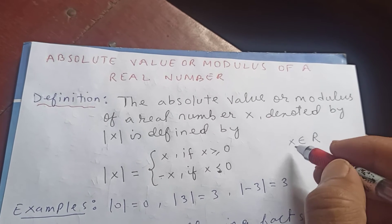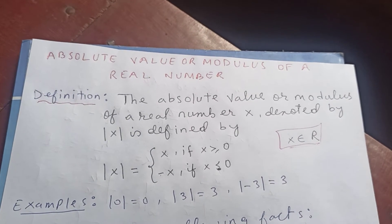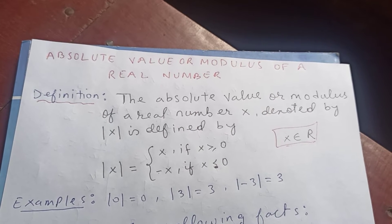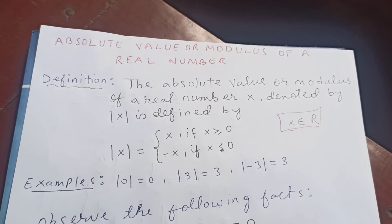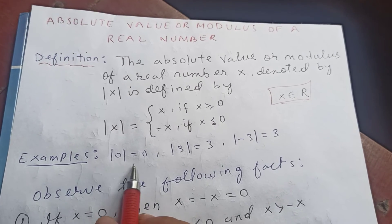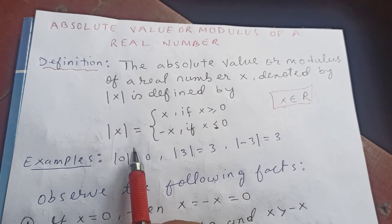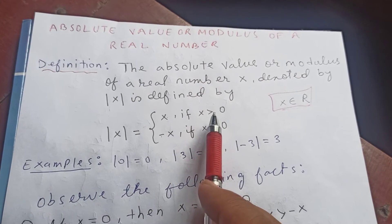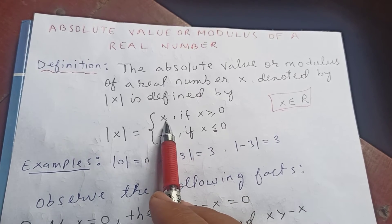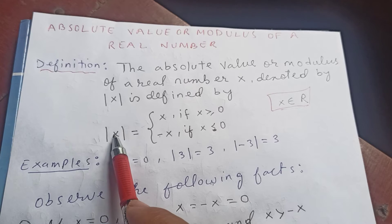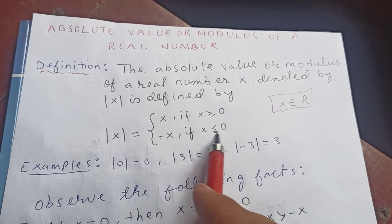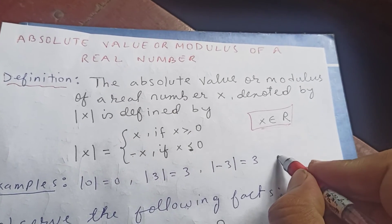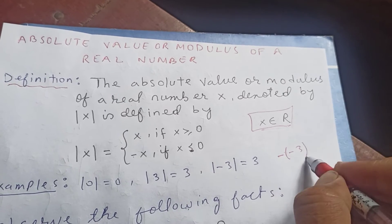This X is nothing but a real number. In complex numbers we are also going to use modulus and absolute value, that's why I'm doing it for real numbers first. For example, modulus of 0 is 0. Modulus of 3 is 3, since 3 is greater than 0. For negative 3, since X is less than 0, by the definition it will be negative times negative 3.